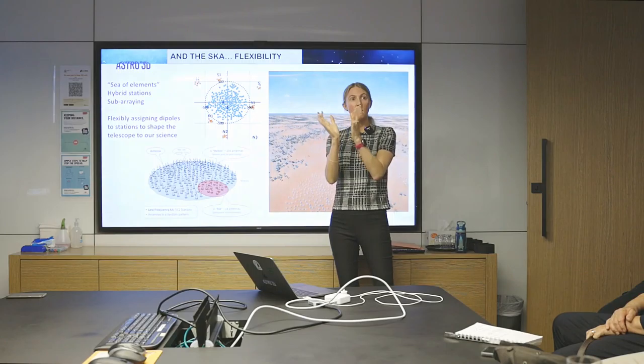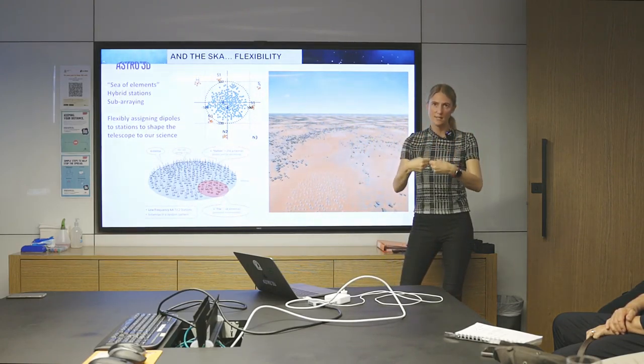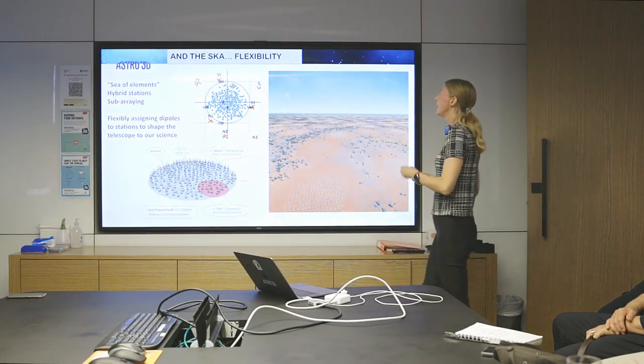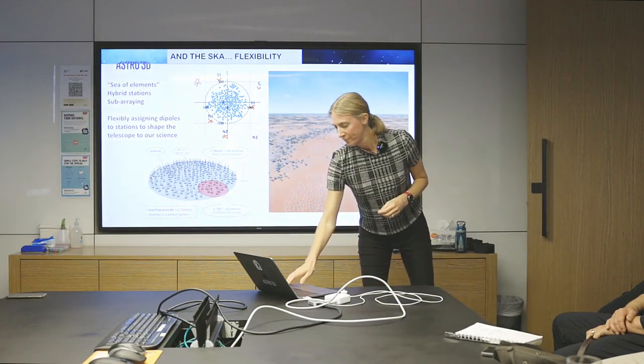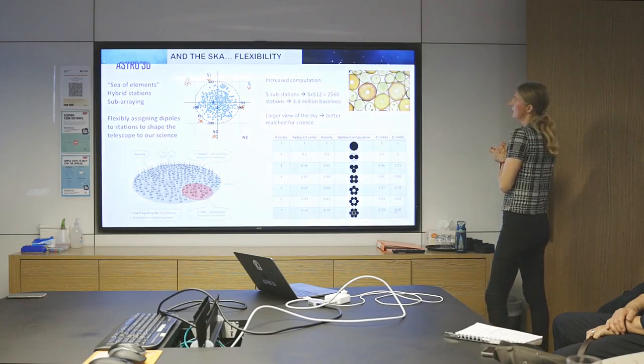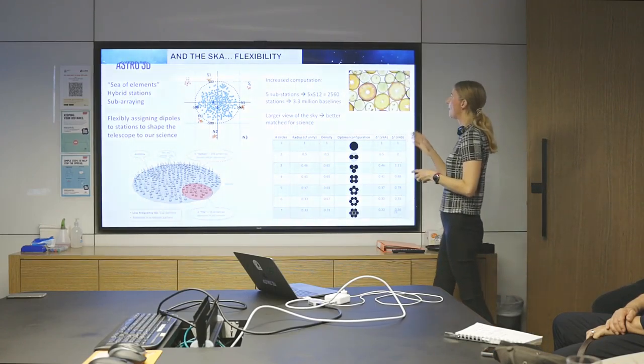It also means that the scales that they measure changes, because where your individual stations are with respect to each other that told you about the angular scales, that's also adapted and changed. So for your science, you might want to have smaller stations with a larger field of view, or you might like to have larger stations with a smaller field of view. And that's what we're trying to do with the SKA, depending on the science that we have.